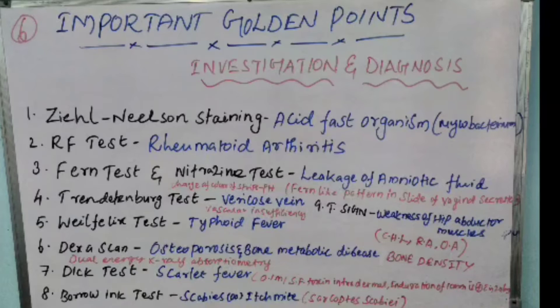Sixth point is DEXA scan, which means Dual Energy X-ray Absorptiometry. It is done to find out osteoporosis, bone metabolic disease, and bone density.